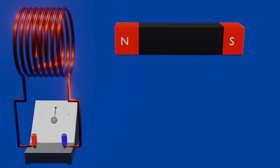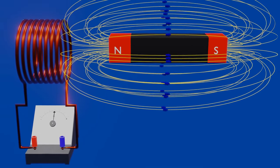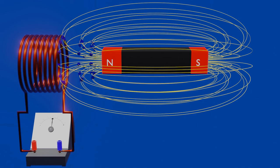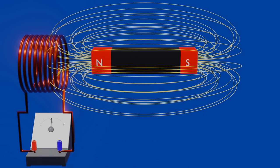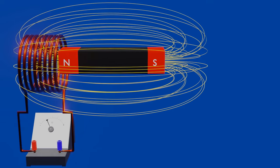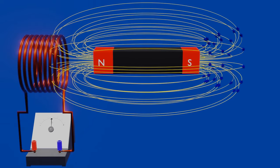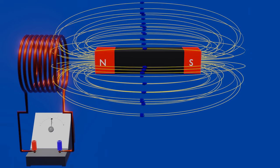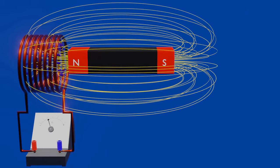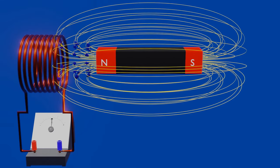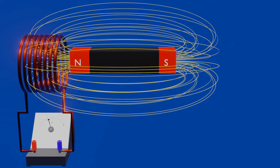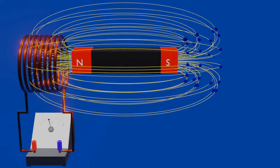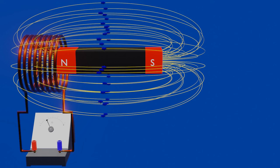As we all know, a bar magnet consists of magnetic field lines emerging from the north pole and entering the south pole. Therefore, when we move the bar magnet towards the coil, the magnetic field lines linking to the cross section of the coil increase — or we can say that the magnetic flux linking to the coil increases as the magnet goes nearer. Because of that change in magnetic flux, that is the change in number of magnetic field lines passing through the cross section of the coil, EMF is induced in the coil.